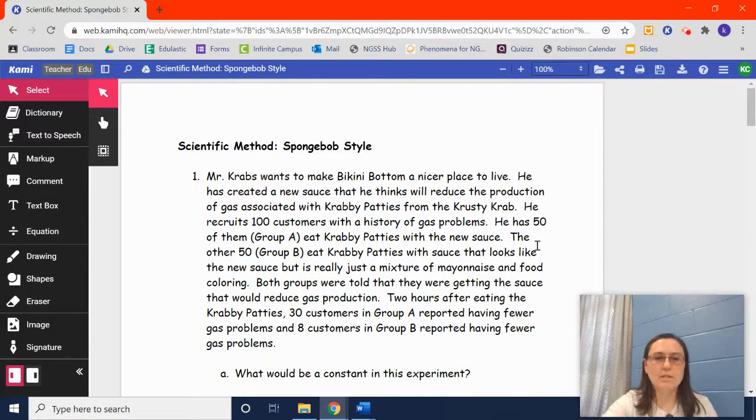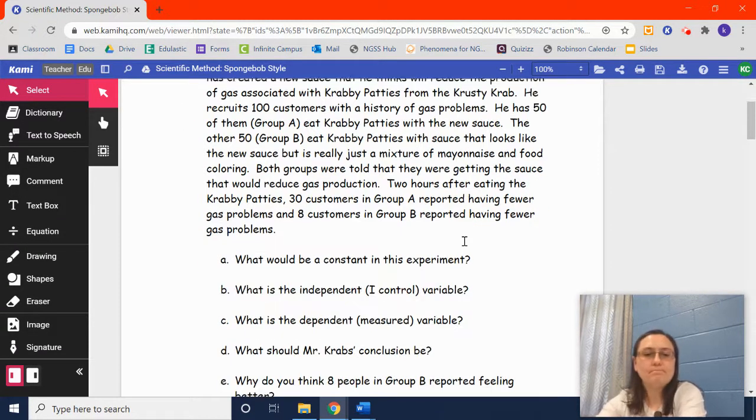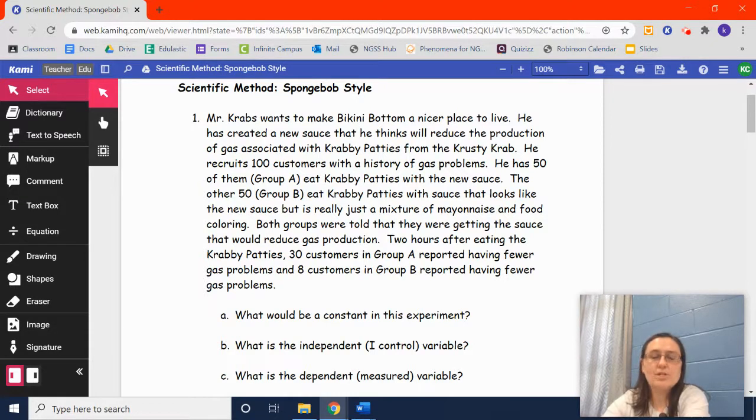Number one. Mr. Krabs wants to make Bikini Bottom a nicer place to live. He has created a new sauce that he thinks will reduce the production of gas associated with Krabby Patties from the Krusty Krab. He recruits 100 customers with a history of gas problems. He has 50 of them, Group A, eat Krabby Patties with the new sauce. The other 50, Group B, eat Krabby Patties with the sauce that looks like the new sauce, but is really just a mixture of mayonnaise and food coloring. Both groups were told that they were getting the sauce that would reduce the gas problem. Two hours after eating the Krabby Patties, 30 customers in Group A reported having fewer gas problems, and 8 customers in Group B reported having fewer gas problems. So, Mr. Krabs is testing out a sauce and he's seeing if it actually makes a difference in gas production after eating Krabby Patties.